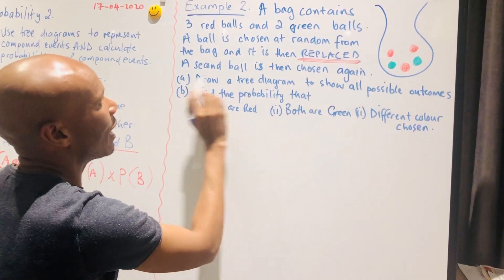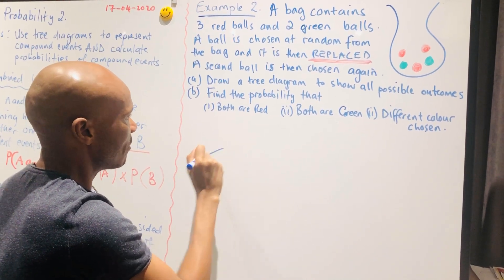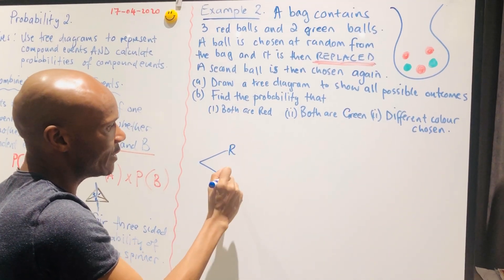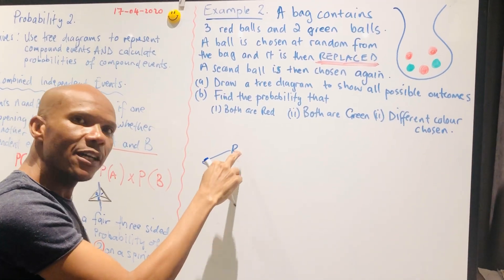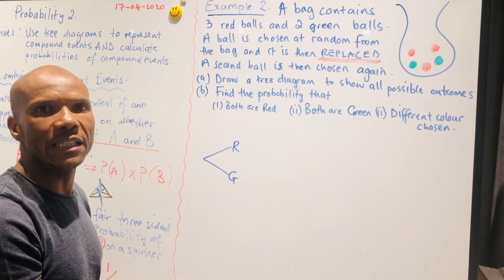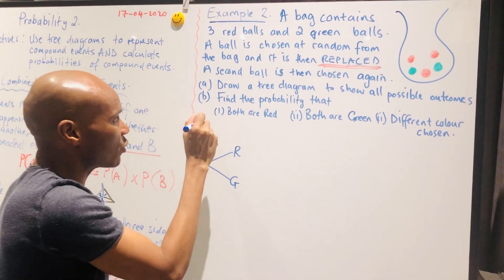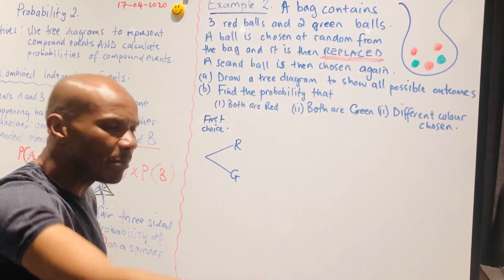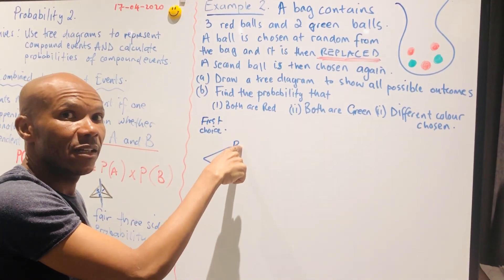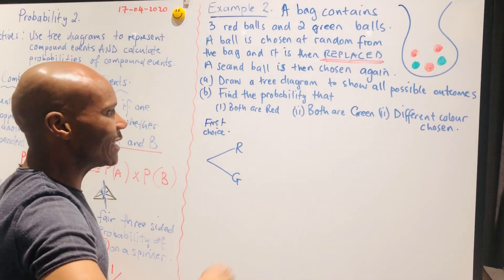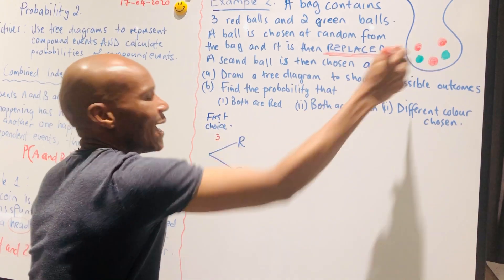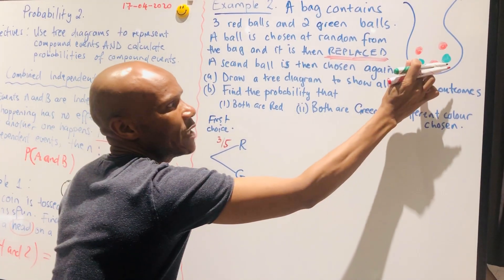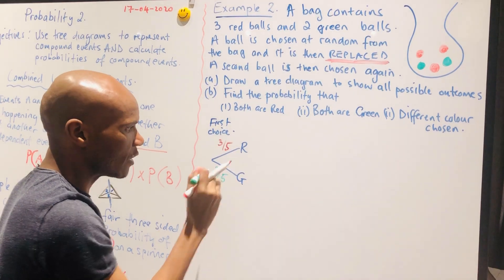How do I represent this to start with? Let me just draw my tree diagram. So we have a red and we have a green. What will be the probability for the first choice? The probability of getting a red — we've got one, two, three — so we'll write it as three out of five. And the probability of getting a green will be two out of five.